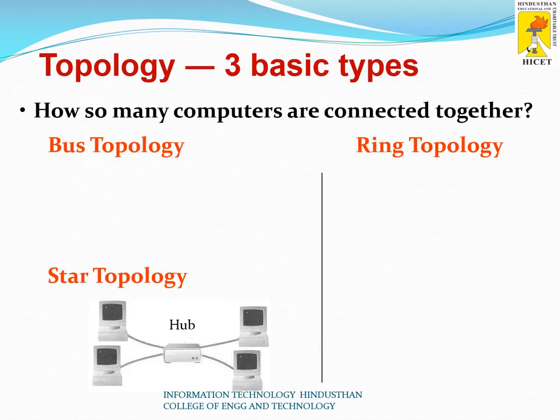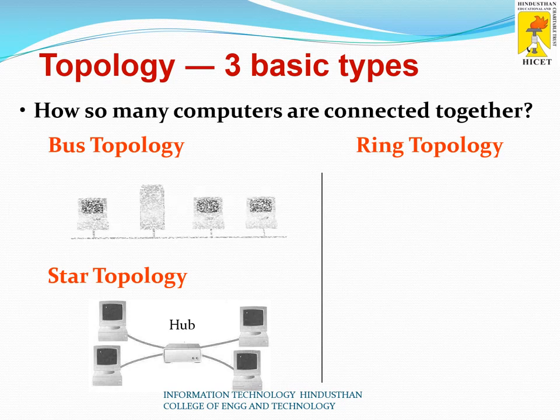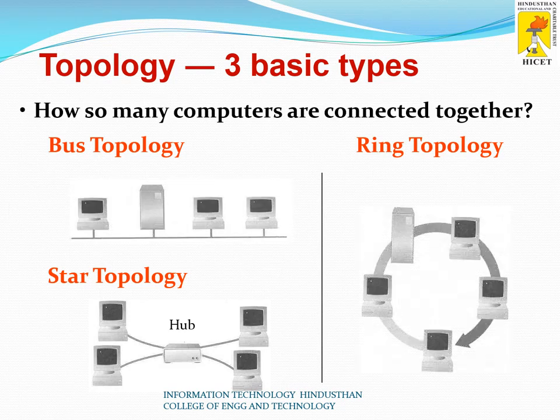Another method of categorization is topology. Based on topology, there are three main topologies: bus topology, ring topology, and star topology. In bus topology, all the systems are connected through a single wire — a single cable.